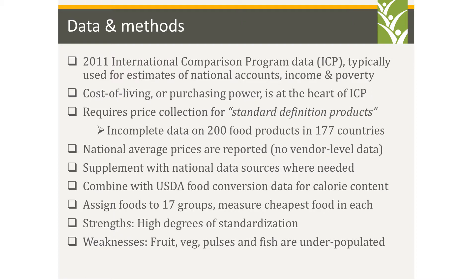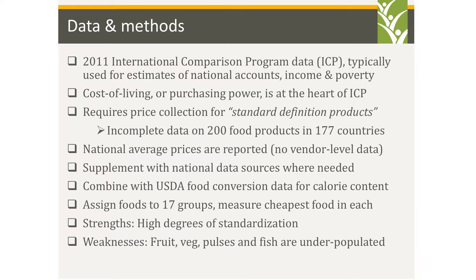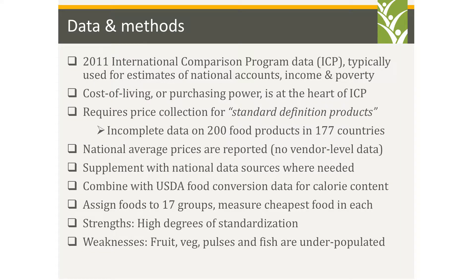For methods, we use the International Comparison Program data — the same data underlying GDP in purchasing power parity units. The heart of the ICP is measuring the cost of living and purchasing power across countries, requiring prices for products defined the same way across countries — what they call standard definition products. We have data on 200 food products across 177 countries. These are national average prices, means taken across different vendors — street markets, bazaars, supermarkets — and are supposed to be nationally representative. A few gaps are filled with national sources, and we combine this with USDA food conversion data to look at calorie content.